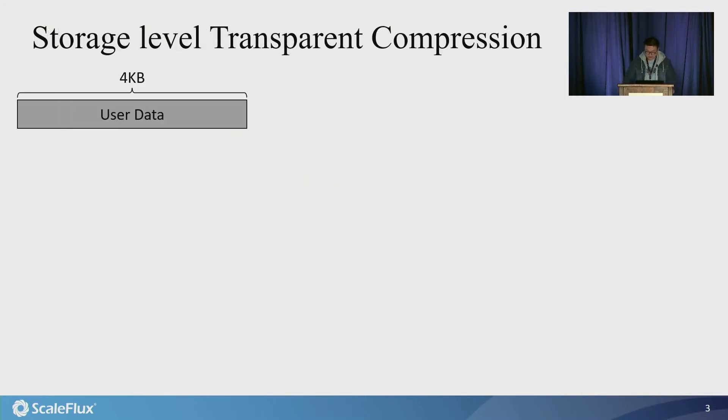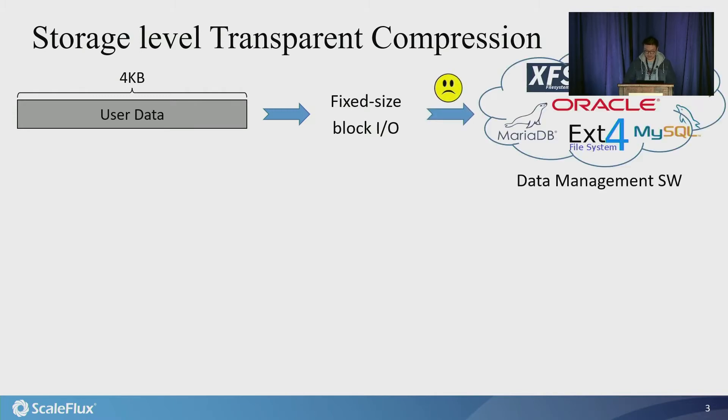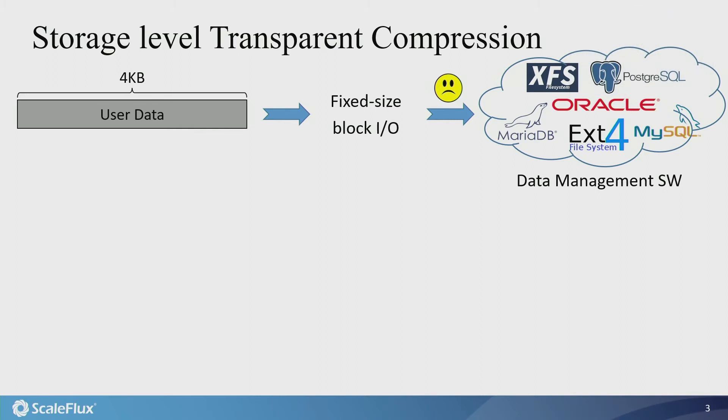Modern storage devices serve I/O requests in the unit of 4KB LBA blocks. As a result, each B+ tree page, regardless of compressed or uncompressed, must entirely occupy one or multiple 4KB LBA blocks on the storage device. When B+ tree applies page compression, the 4KB alignment constraint could incur noticeable storage space waste.